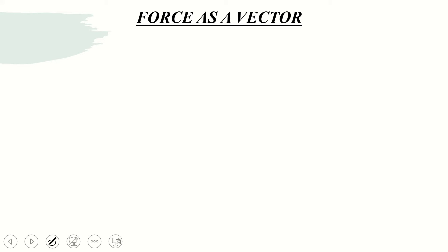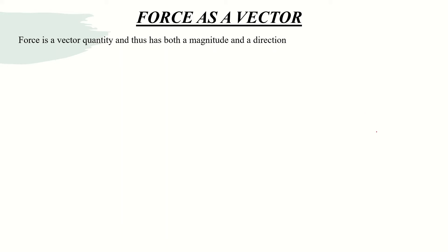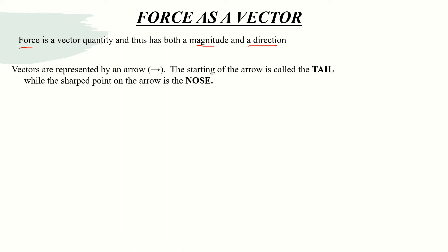Today I want to talk about force as a vector. Vectors are quantities that have a magnitude and a direction. Force is a vector quantity, meaning force has both a magnitude and a direction. A force vector can be represented by an arrow — for example, vector AB can be written in this form: vector AB.